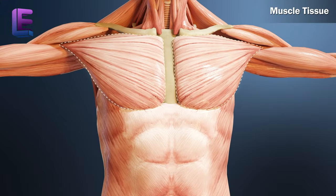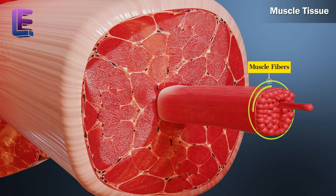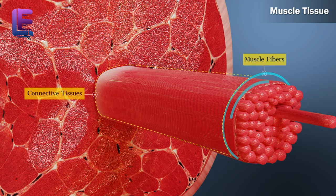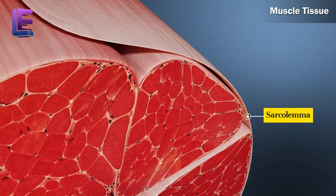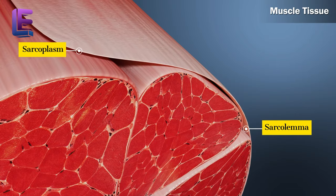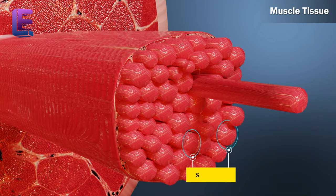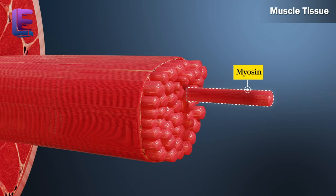Muscles have three primary functions. Muscle tissues have long cells called muscle fibers. These have connective tissue cover; however, they don't have a capsule. The plasma lemma of muscle tissue is called sarcolemma. The cytoplasm of muscle tissue is called sarcoplasm. Within this, there are multiple fine myofibrils. Each myofibril is made of a thick and long myosin filament and a thin and short actin filament.